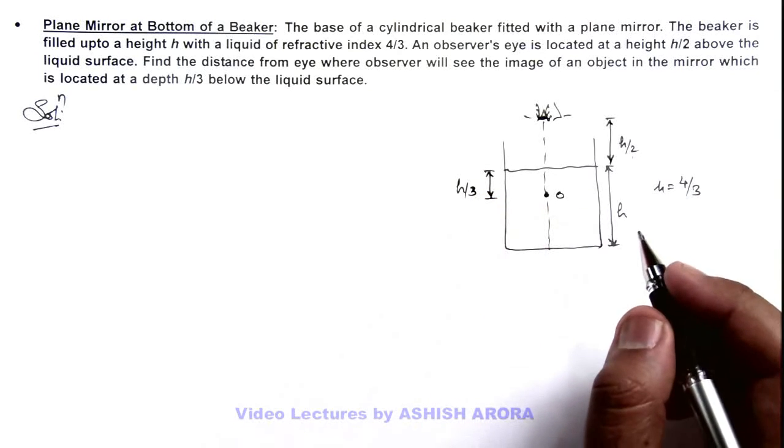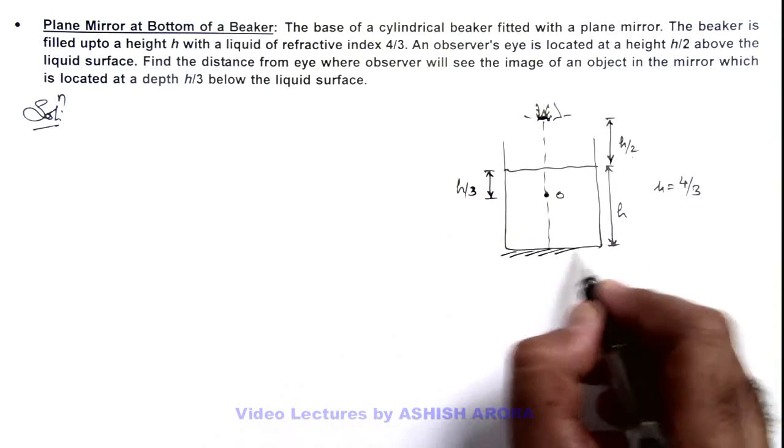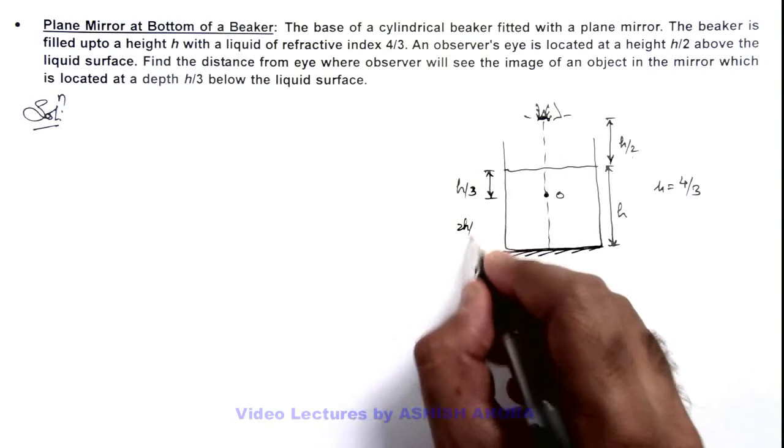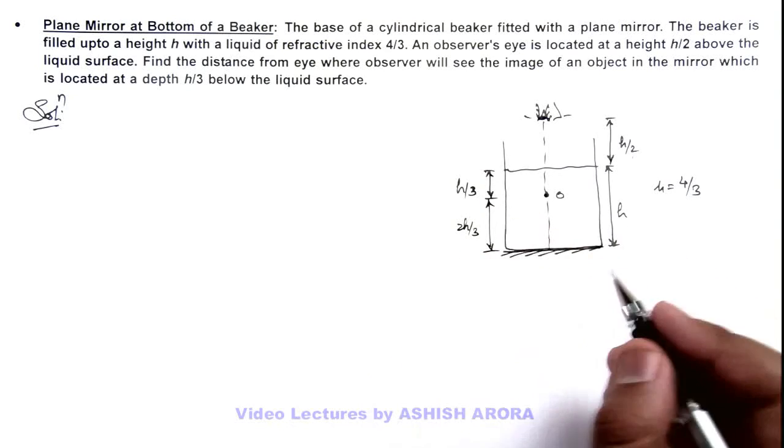Here we can see the object distance from the base of mirror where a plane mirror is fitted at the bottom is 2h/3. This distance will be obviously h minus h/3, that is 2h/3.